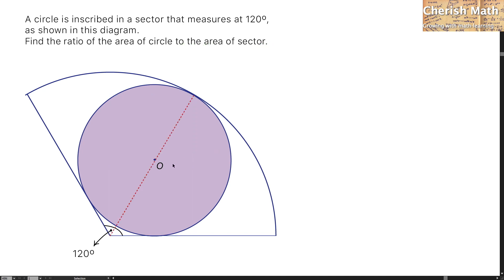Let me draw a red line that bisects the circle and the sector, and two more lines that are perpendicular with the radius of the sector. Let me label the radius of the sector as uppercase R, and the radius of the circle as lowercase r. The length of this part is going to be uppercase R minus lowercase r.